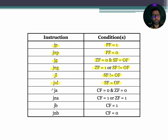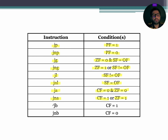Next is JA, which stands for jump if above. For JA, both carry flag and zero flag must be equal to 0. Next is JNA, which stands for jump if not above; the conditions are either carry flag equals 1 or zero flag equals 1. Next is JB, which stands for jump if below; for JB, carry flag equals 1. The last commonly used jump instruction is JNB, which stands for jump if not below; the condition is carry flag equals 0.